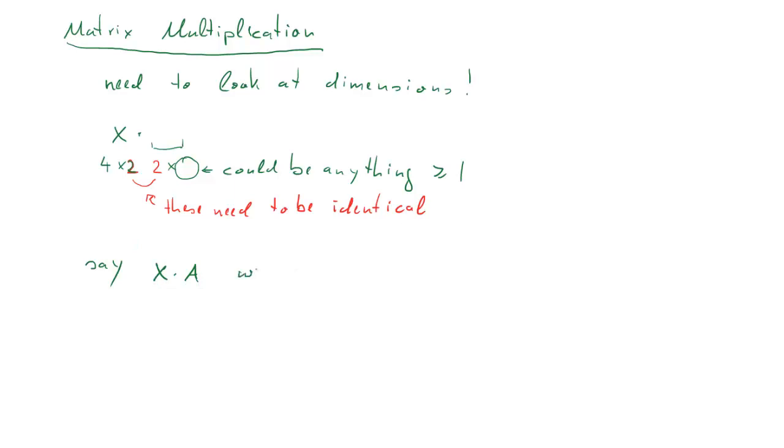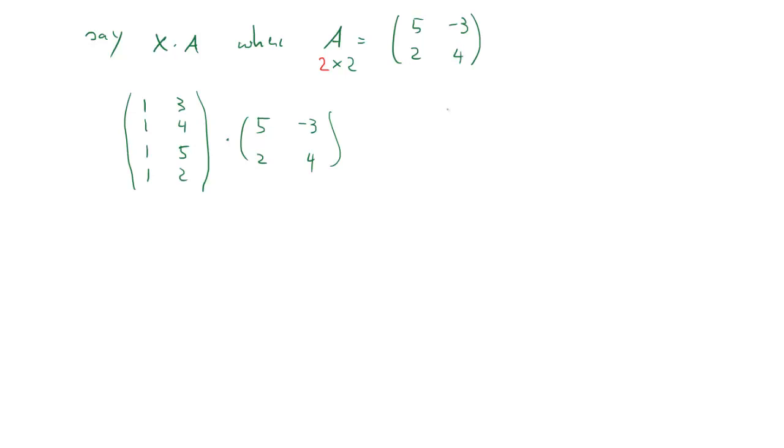Let's say our A is this, a 2 by 2 matrix. So here's our X, here's our A. How do we multiply this together?